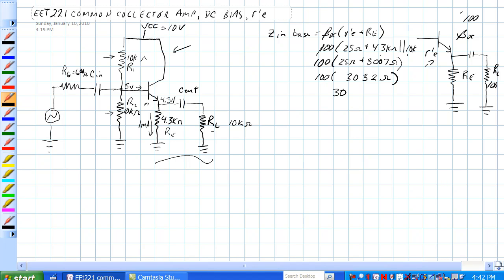And 100 times that is 3,032 and 2,0s. So we have 303k ohms, 303.2k ohms for ZN base.